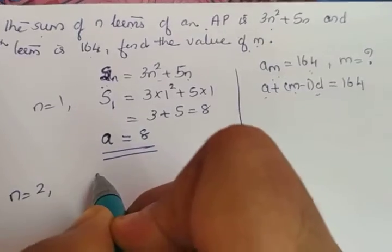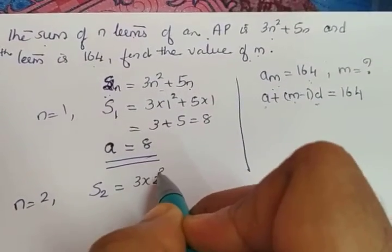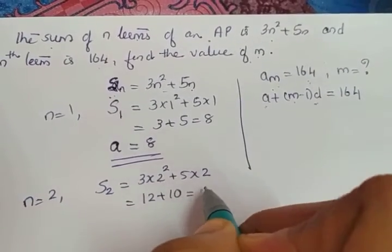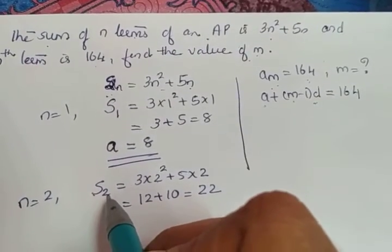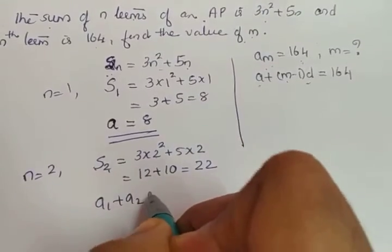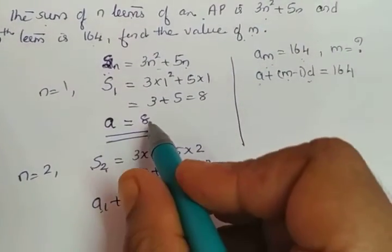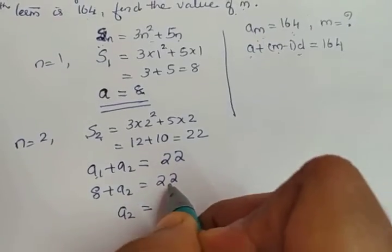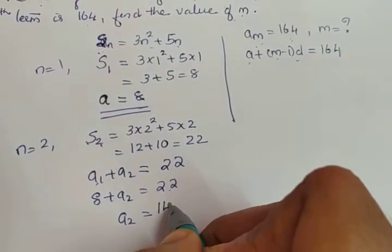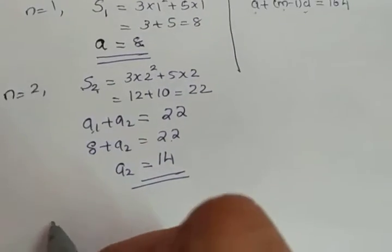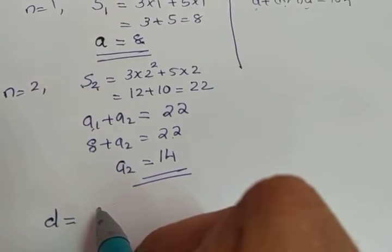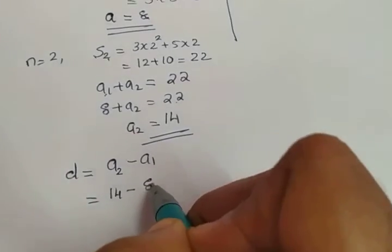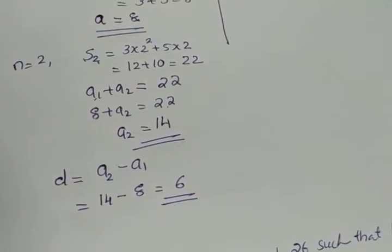S2 = 3(2²) + 5(2) = 3×4 + 10 = 12 + 10 = 22. S2 is the sum of the first two terms, so a1 + a2 = 22. Since a1 = 8, we get a2 = 22 - 8 = 14. The common difference d = a2 - a1 = 14 - 8 = 6.